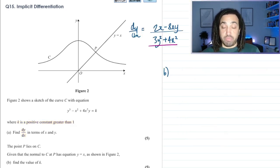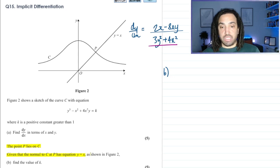Okay, part b says the point p lies on c. Given that the normal to c at p has the equation y equals x, as shown in Figure 2, find the value of k. Interesting.